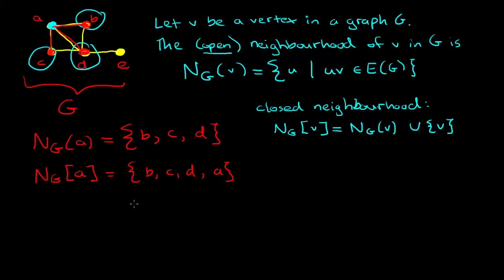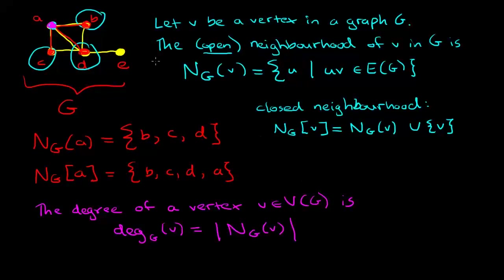So why do we worry about defining the neighborhood? The reason the neighborhood is so useful is because now we can carefully define the degree of a vertex. The degree of a vertex is the number of edges that are incident with that vertex. A nice way to define the degree is in terms of the size of the open neighborhood. So the degree of a vertex v in a graph G is equal to the size of the open neighborhood. In our example, vertex a has degree three, vertex b has degree two, vertex e has degree one, vertex d has the highest degree of four, and vertex c has degree two.